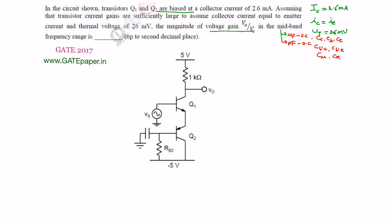Now we need to draw the AC equivalent circuit, then calculate the voltage gain for the given circuit. When drawing the AC equivalent circuit, you must consider that DC voltage sources are going to be shorted. If any DC currents are flowing, they will be acting as open circuit.